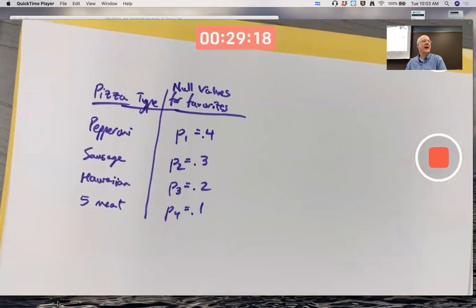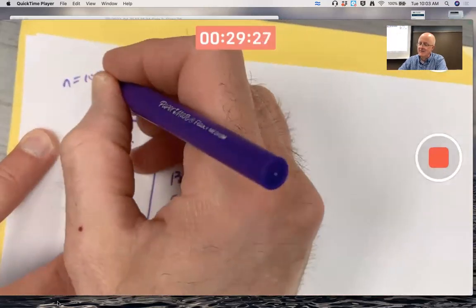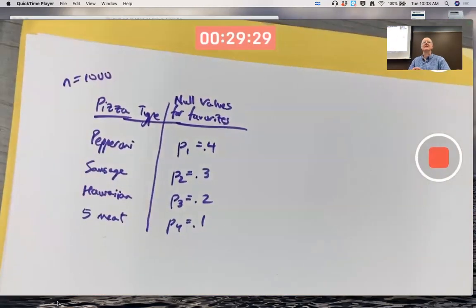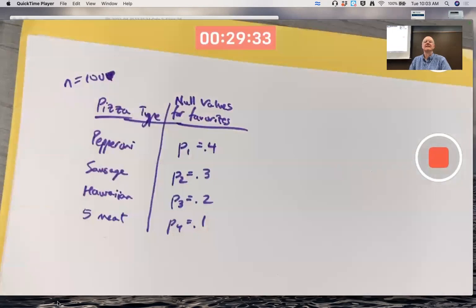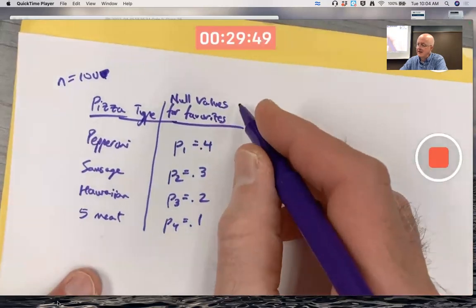How many people are we going to survey their favorites, and they can only pick from these four? Let's say we survey 100 people at random. So survey 100 people at random, what's your favorite from these four? We'll get some observed values. We can also compute expected values.